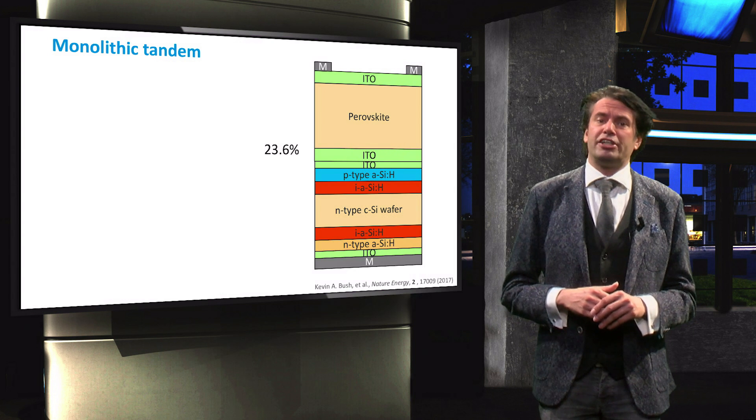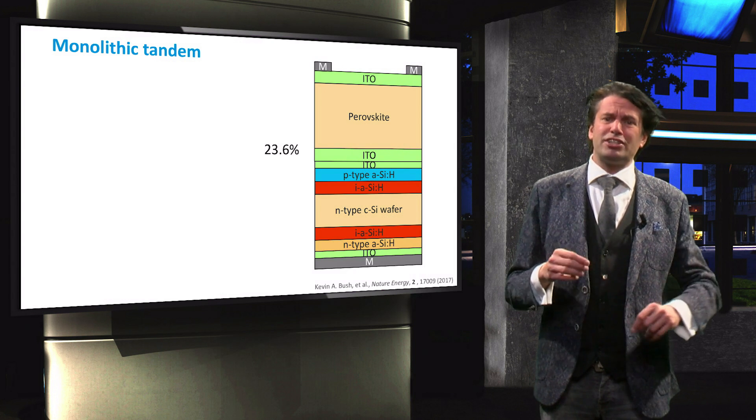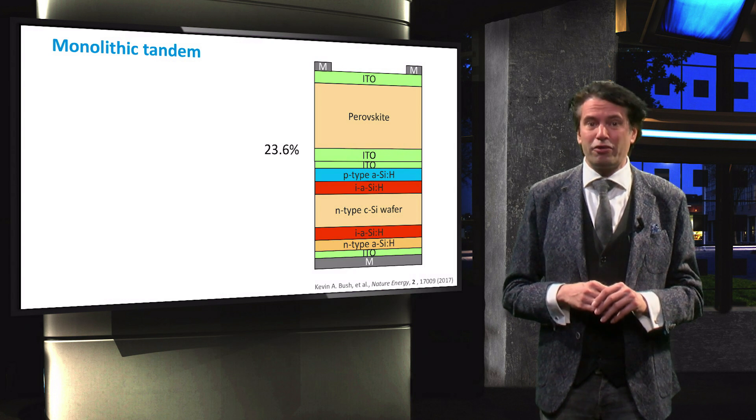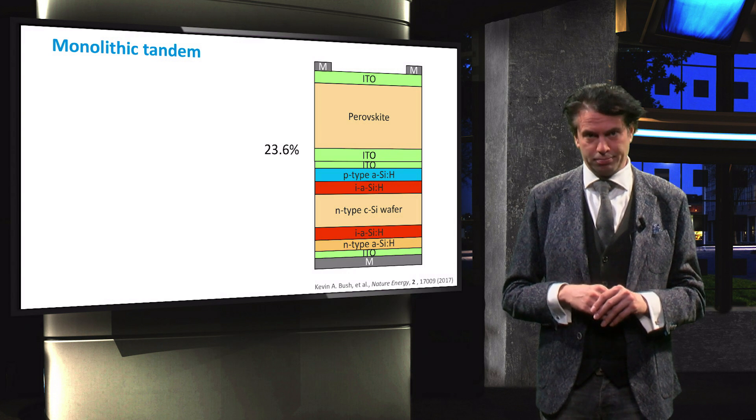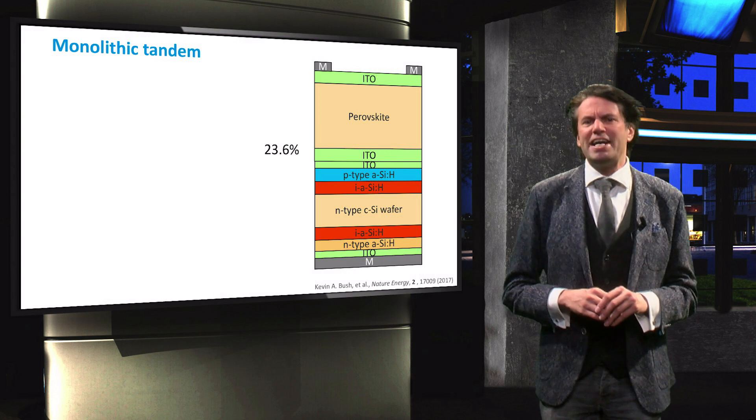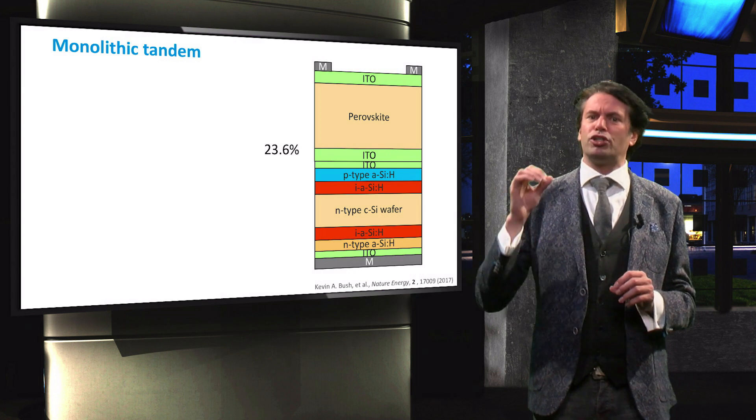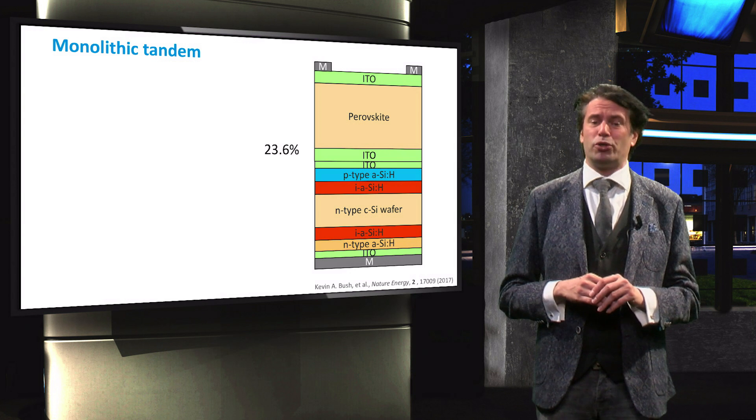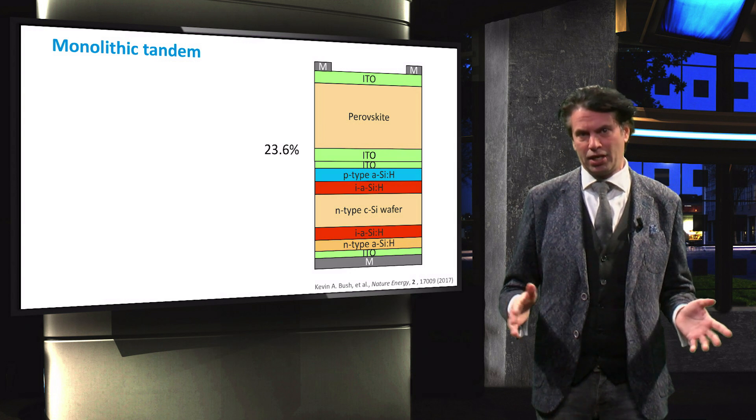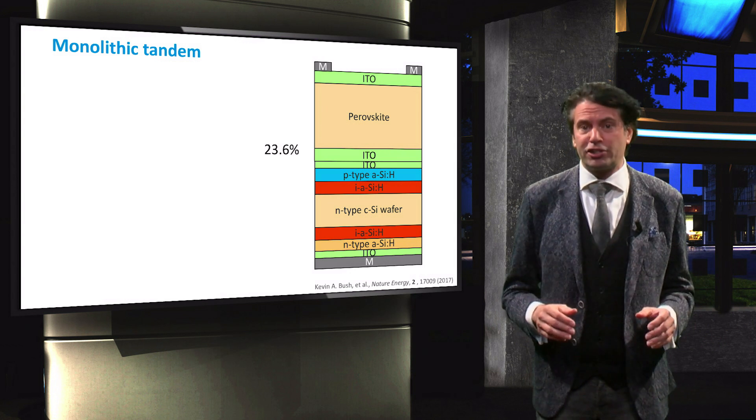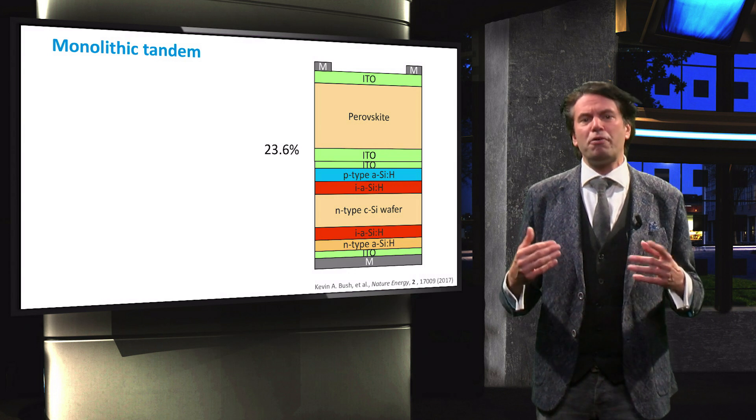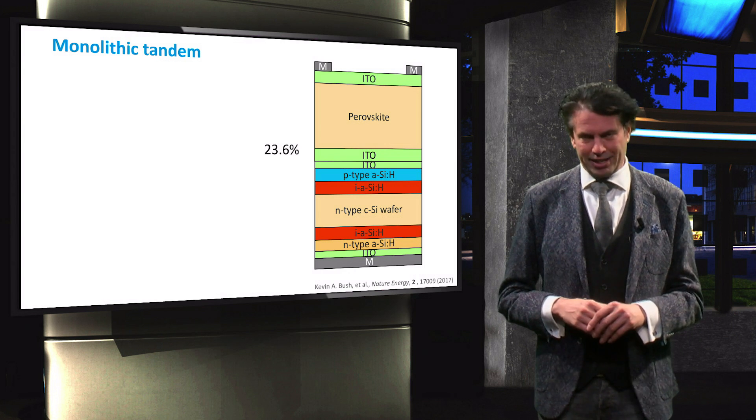The two-terminal tandem configuration resulting from these two cells has a record efficiency of 23.6% up to date. In theory, based on the current state-of-the-art crystalline silicon and perovskite technology, such a hybrid device could achieve a 29.2% maximum efficiency. Since the actual record efficiency is much lower, a lot of improvement is still possible for this tandem configuration.